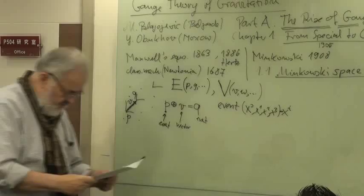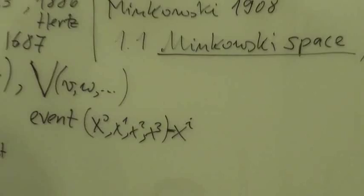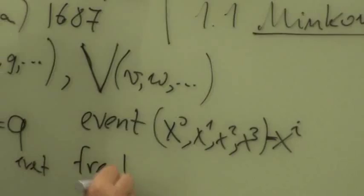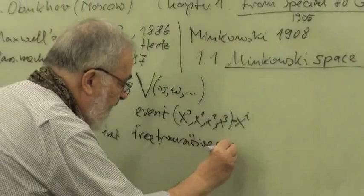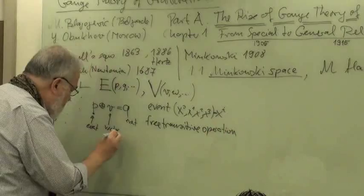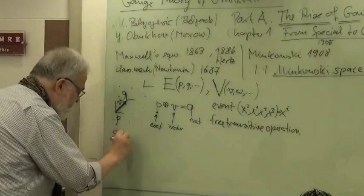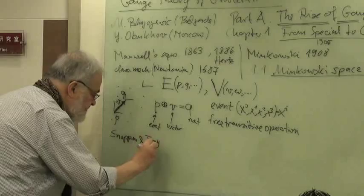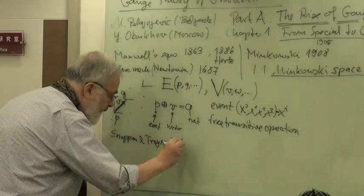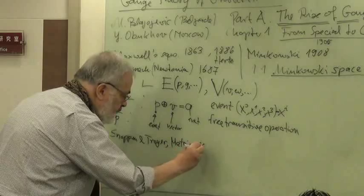This translation is what mathematicians call a free transitive operation. I would like to refer to the book of Snapper and Treuer, simply called Metric Affine Geometry.